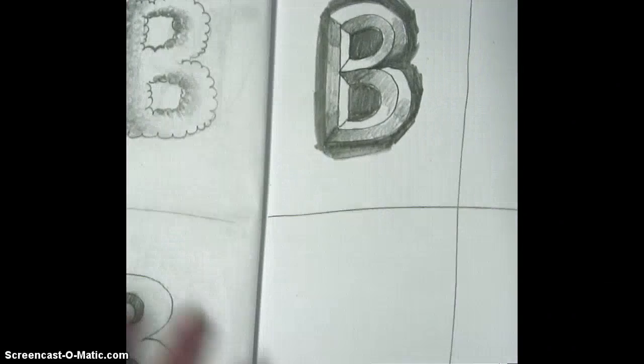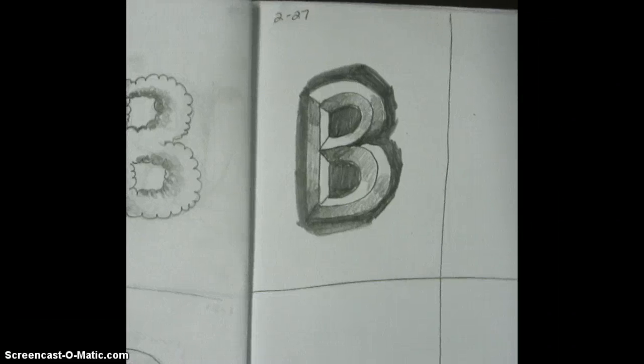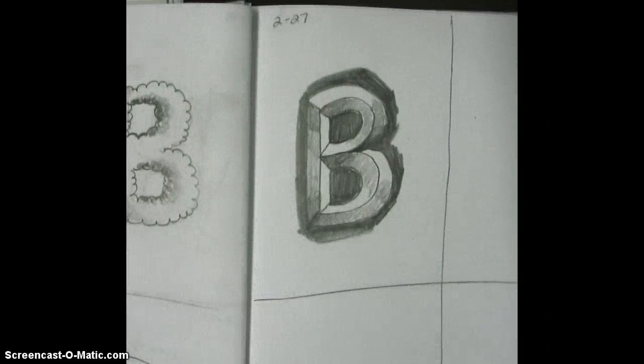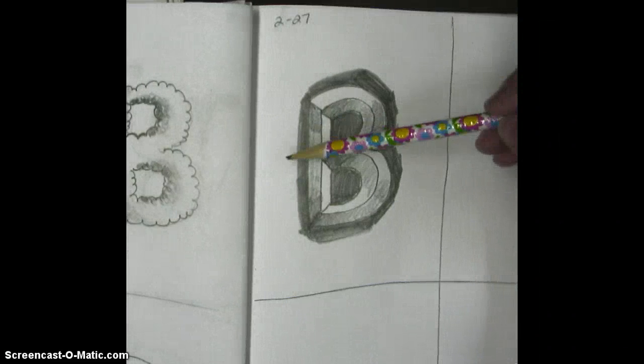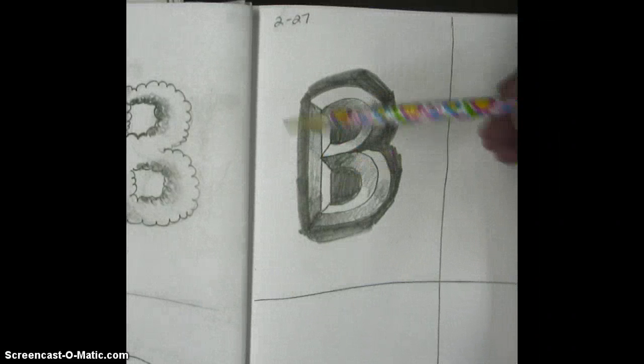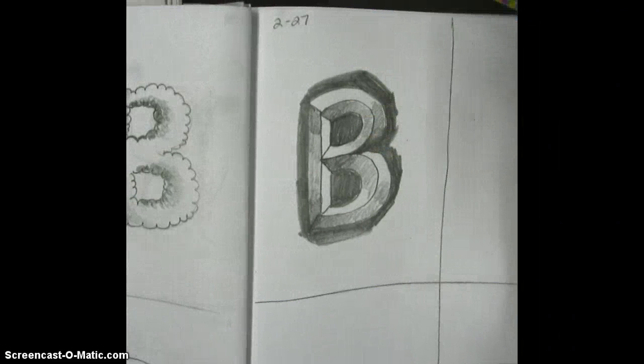And there you have it. There is your chiseled stone B. I'd like you to make one of these today. Please make sure you watch your proportion. Try to keep the parts of your B equal. You don't want one really fat part, one really skinny part. Try to keep them equal.